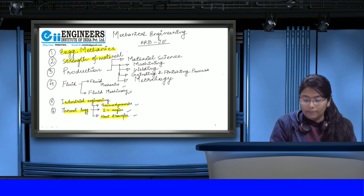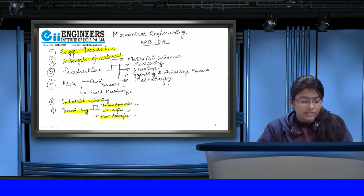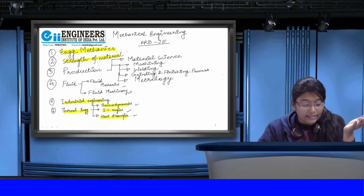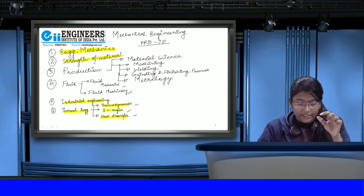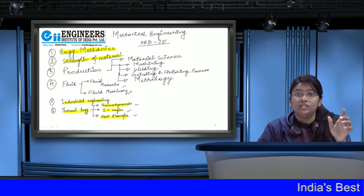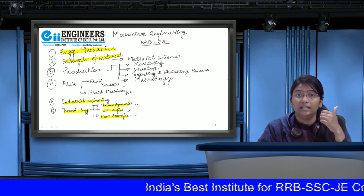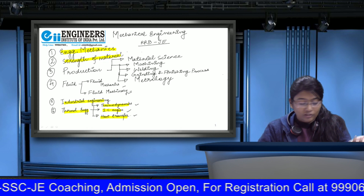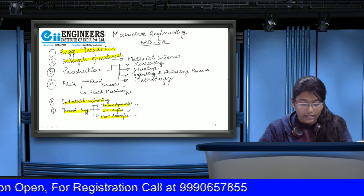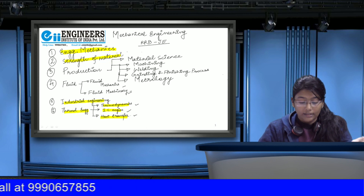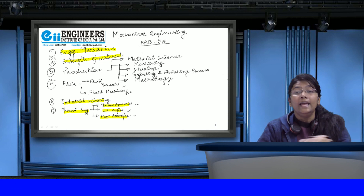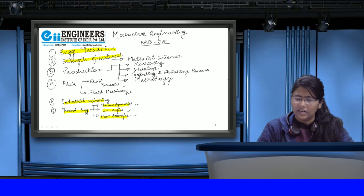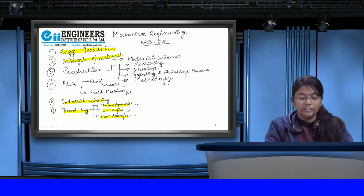I noticed that the engineering mechanics part is larger than the strength of material part in this syllabus. However, we have to study each and everything because they can give questions on any basic concept. In strength of materials, they have mentioned: stress-strain diagram, stress-strain definitions, factor of safety, strain energy, proof resilience and modulus of resilience, SFD-BMD for cantilever and beams, fixed beam and continuous beam, torsion in shafts and springs, and thin cylindrical shells.